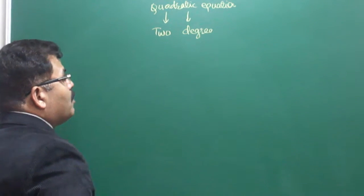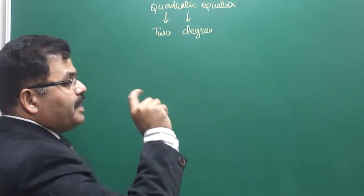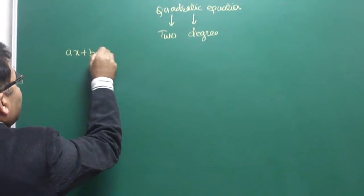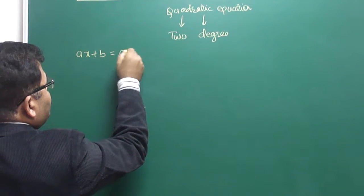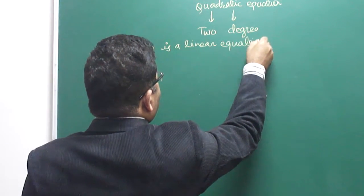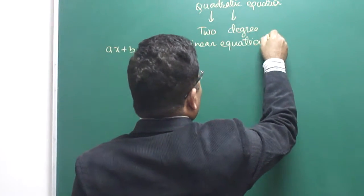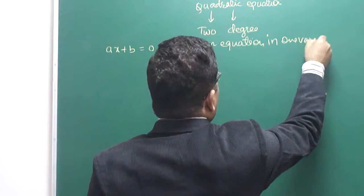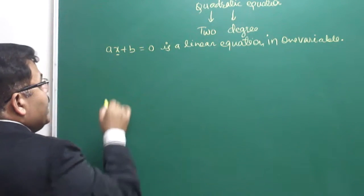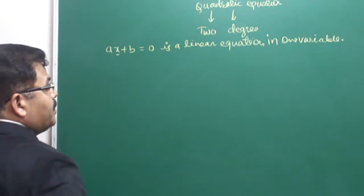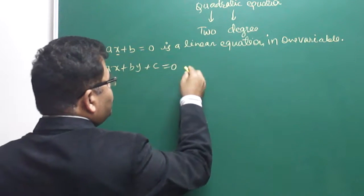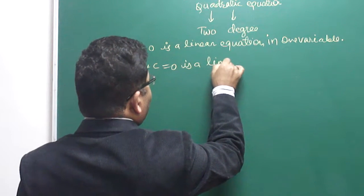A second-degree equation is called a quadratic equation. What is the meaning of second degree? Two degree. ax plus b equals 0 is a linear equation — a linear equation in one variable. x is the variable, and a and b are constants. If I write ax plus by plus c equals 0, it is a linear equation in two variables.